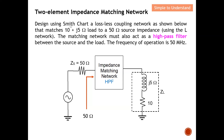From the problem, I extract that the load is 10 plus j5 — it's inductive because of the positive imaginary term. The source is purely resistive at 50 ohm. Earlier in Part 6 I discussed doing the complex conjugate. In this case, since the source impedance has no imaginary term, the complex conjugate is still exactly 50 ohm. So I'm ready to draw everything onto the Smith chart.